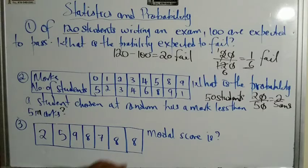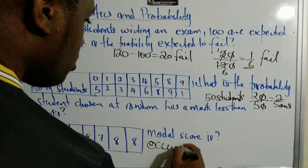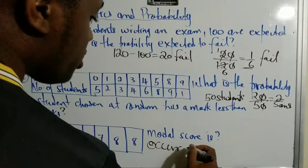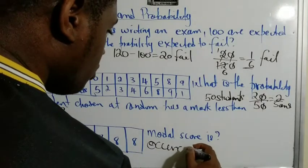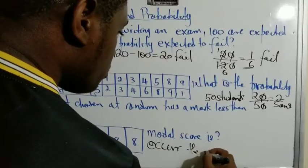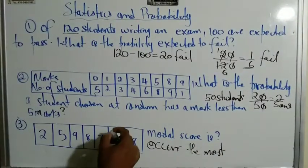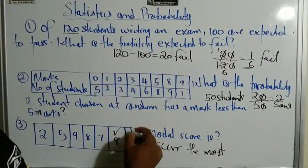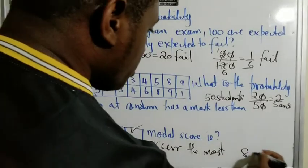This one gives us the numbers 2, 5, 9, 8, 7, 8, 8 and asks for the modal score. The mode is the value that occurs most frequently. Eight occurs three times, so the answer is eight.